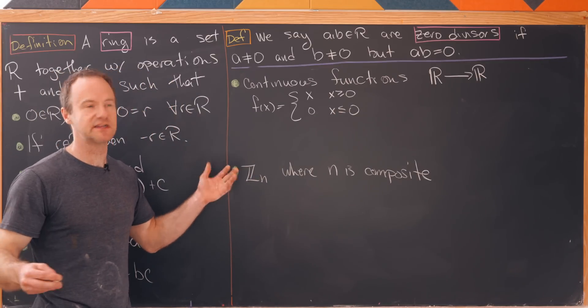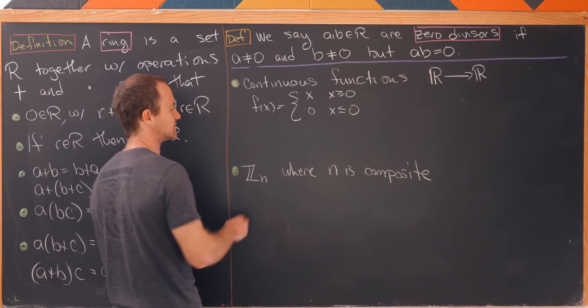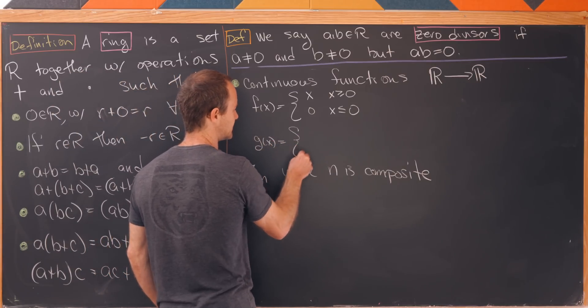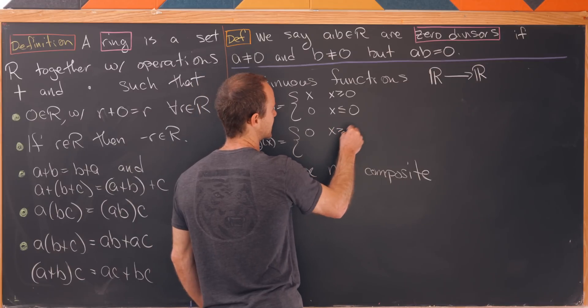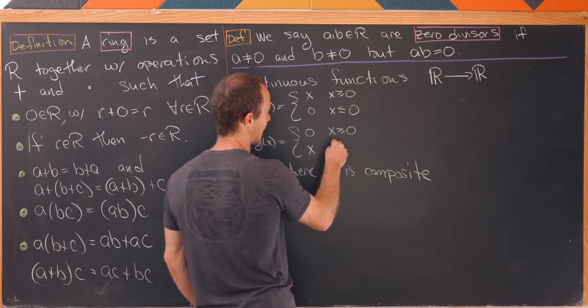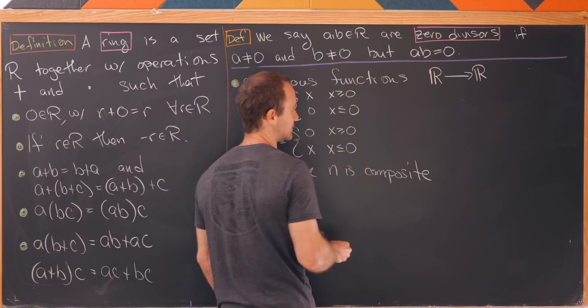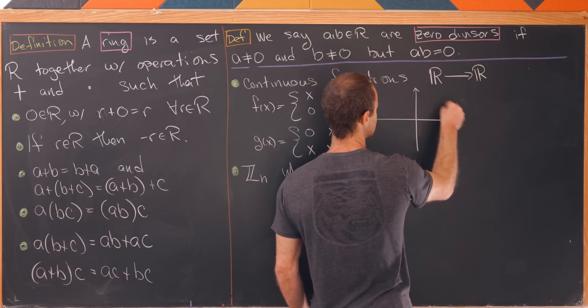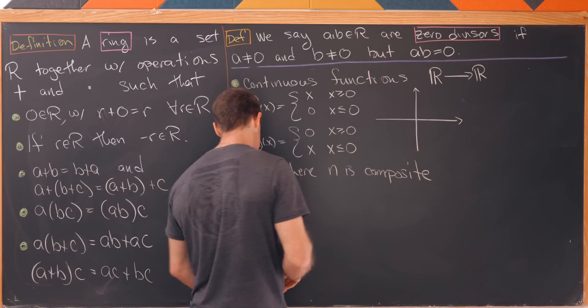And then we'll take g(x) to be equal to zero when x is bigger than or equal to zero and x if x is less than or equal to zero. And now let's graph this to convince ourselves that if we take the product we indeed get zero.